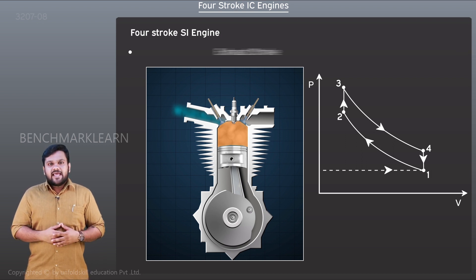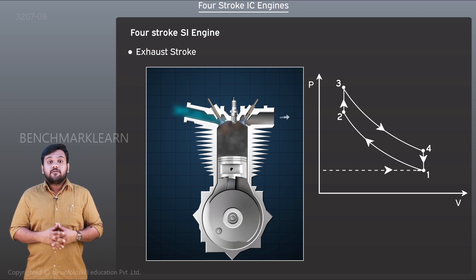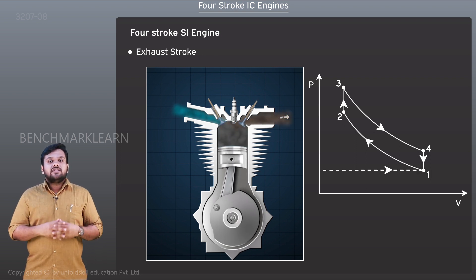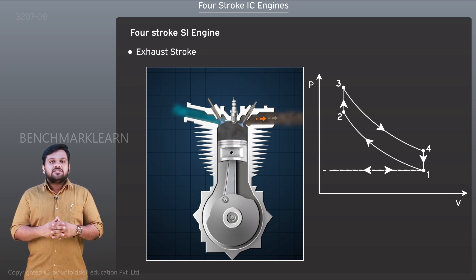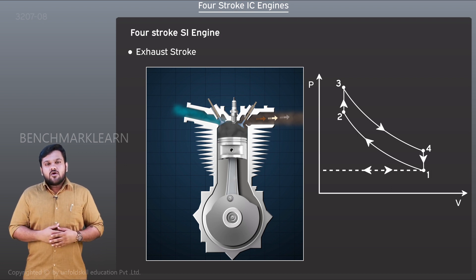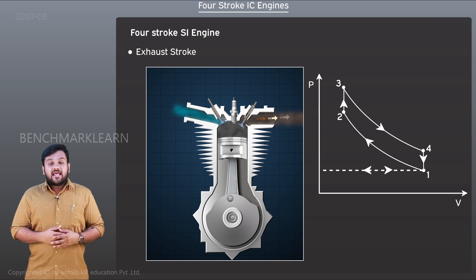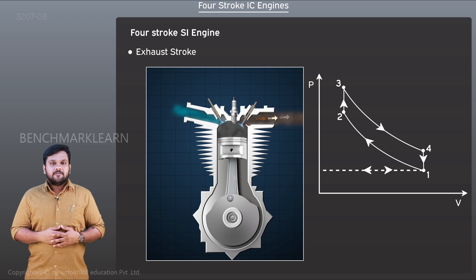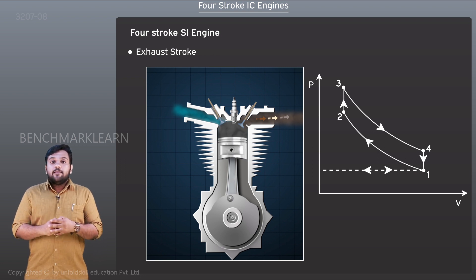The next stroke is the exhaust stroke, during which the piston moves from the bottom dead center to the top dead center, pushing the combustion gases outward through the exhaust valve opening. This occurs at constant pressure and is represented by a dotted line in the PV diagram, similar to the intake process.